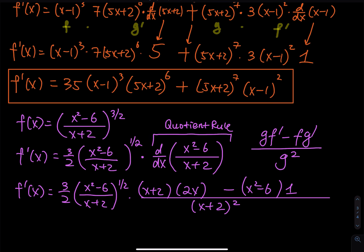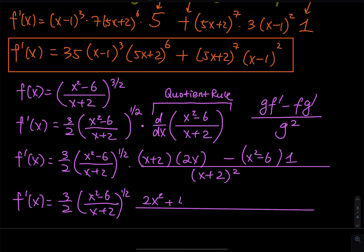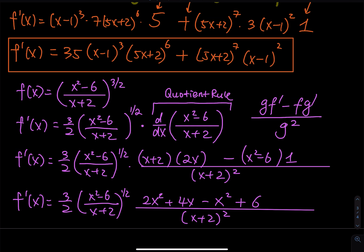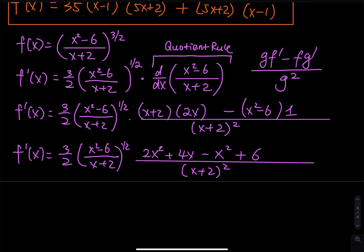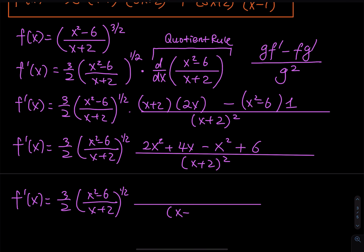Then fully open up the top and write our final answer. So 3 over 2 times x squared minus 6 divided by x plus 2, to the 1/2. Long fraction bar. Distribution: 2x squared plus 4x. Remember what I said in the quotient rule — sometimes you have so many terms to expand, just be very careful. So 2x squared plus 4x, and then minus x squared plus 6, divided by x plus 2 squared. The only thing I can do is 2x squared minus x squared, which is x squared.